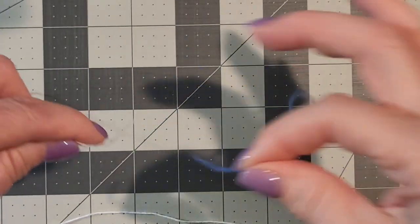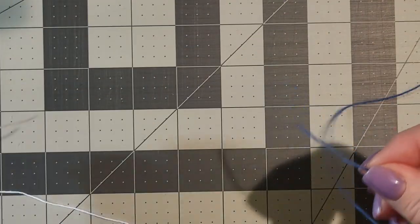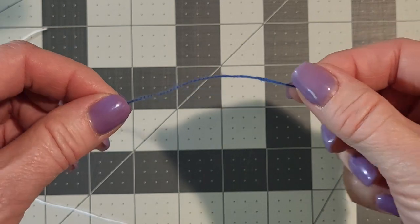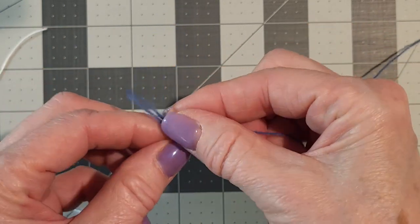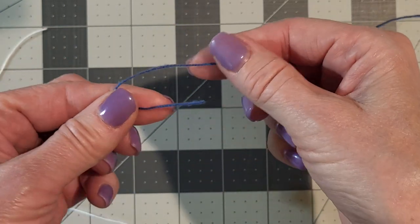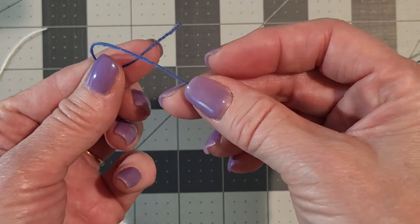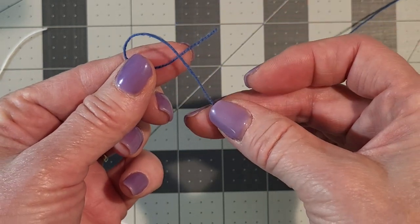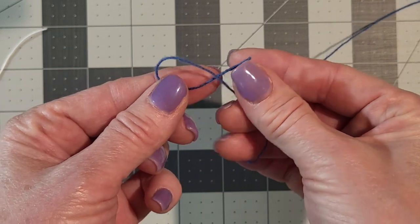Okay so we're going to take our new warp. We're going to create a loop and we're going to put the long end of the loop over the short end of the loop.